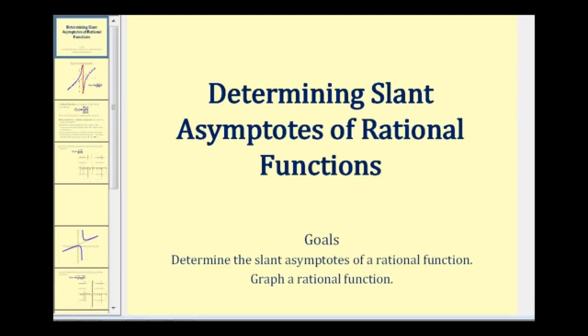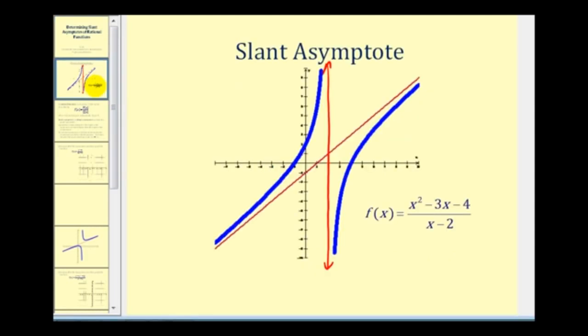Welcome to a lesson on determining slant asymptotes of a rational function. This video assumes you've already watched the video on vertical and horizontal asymptotes of rational functions. The goals are to determine the slant asymptotes of a rational function and then graph a rational function. Let's take a look at how we can determine when a rational function has a slant asymptote and how to find it.